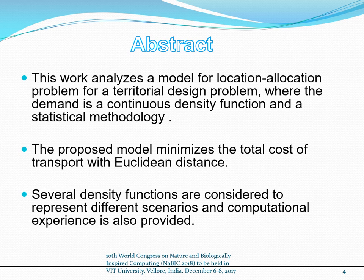Abstract. This work analyzes a model for the Location Allocation Problem for a Territorial Design Problem, where the demand is a continuous density function and a statistical methodology is applied. The proposed model minimizes the total cost of transport using Euclidean distance. Several density functions are considered to represent different scenarios, and computational experience is also provided.